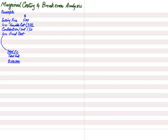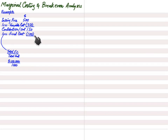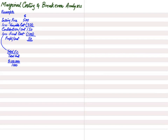For example, the fixed cost for the business is $100,000 per month. If we estimated selling 1,000 shirts in one month, the fixed cost per shirt is $100 ($100,000 ÷ 1,000). So: selling price $500, variable cost $350, contribution $150, minus fixed cost $100, gives profit per shirt of $50.